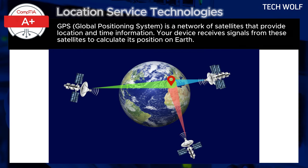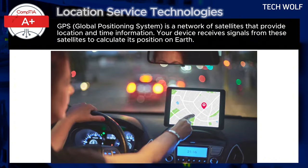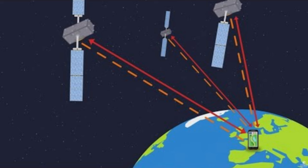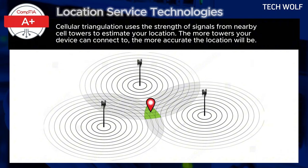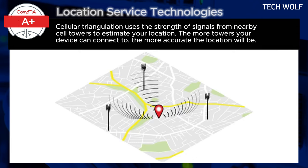GPS stands for Global Positioning System and is a network of satellites that provide location and time information. Your device receives signals from these satellites to calculate its position on Earth. Cellular triangulation uses the strength of signal from nearby cell towers to estimate your location.